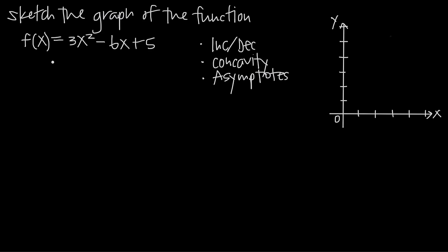In this particular problem, we've been given the function f(x) = 3x² - 6x + 5. The first thing we want to look at is where this function is increasing and where it is decreasing. In order to do that, we'll need to find critical points.